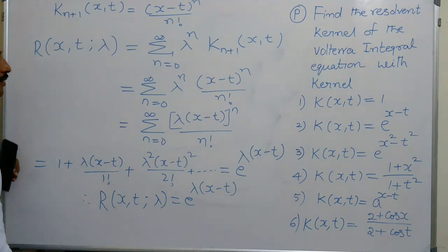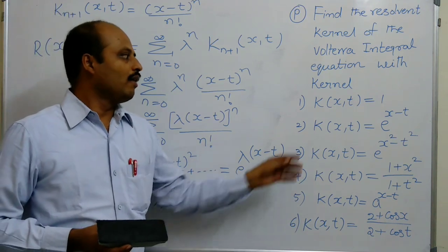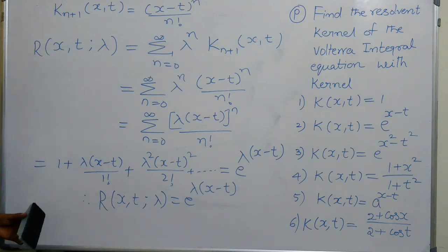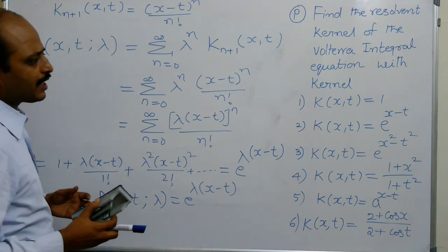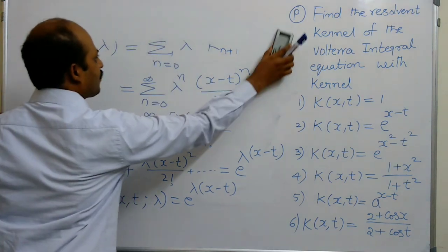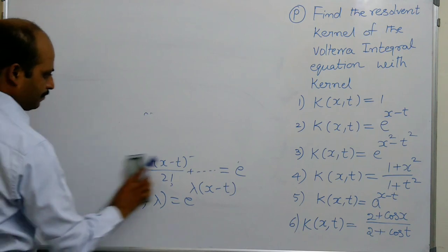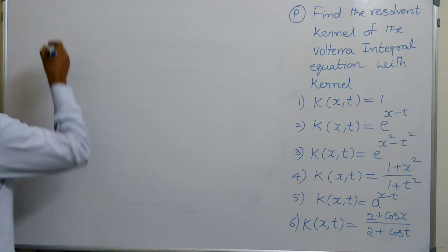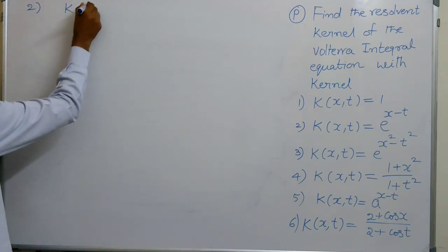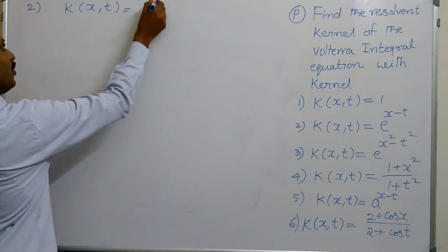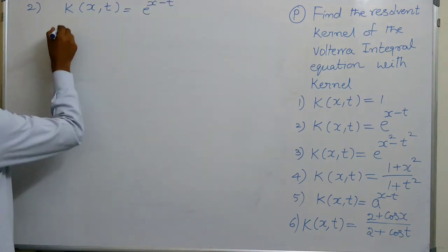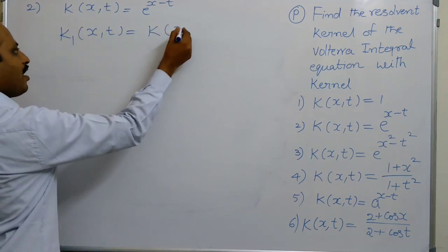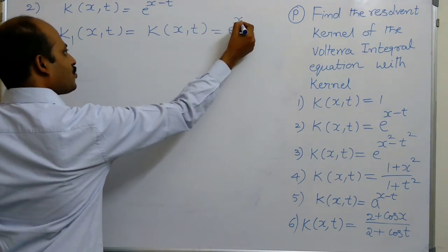This is the procedure to find the resolvent kernel when the kernel of the integral equation is given. Let us solve the second one. K of X, T is equals to e^(X minus T). So K1 of X, T equals e^(X minus T).